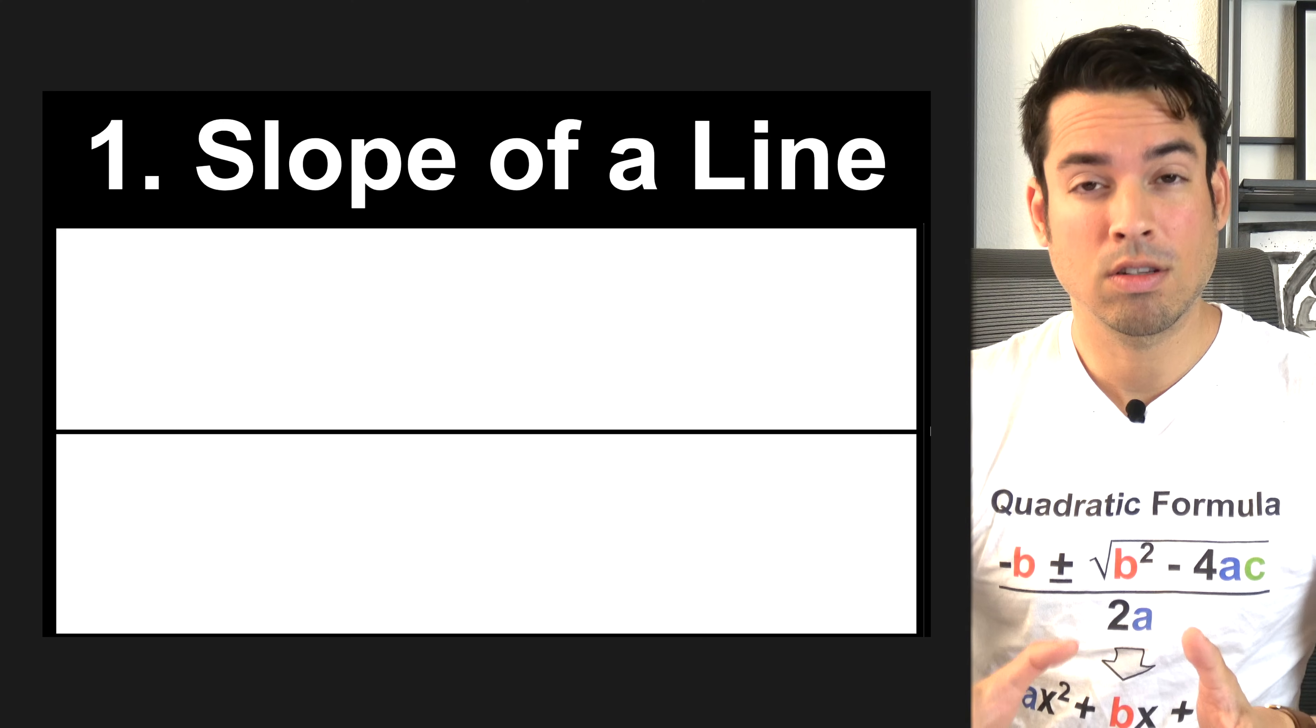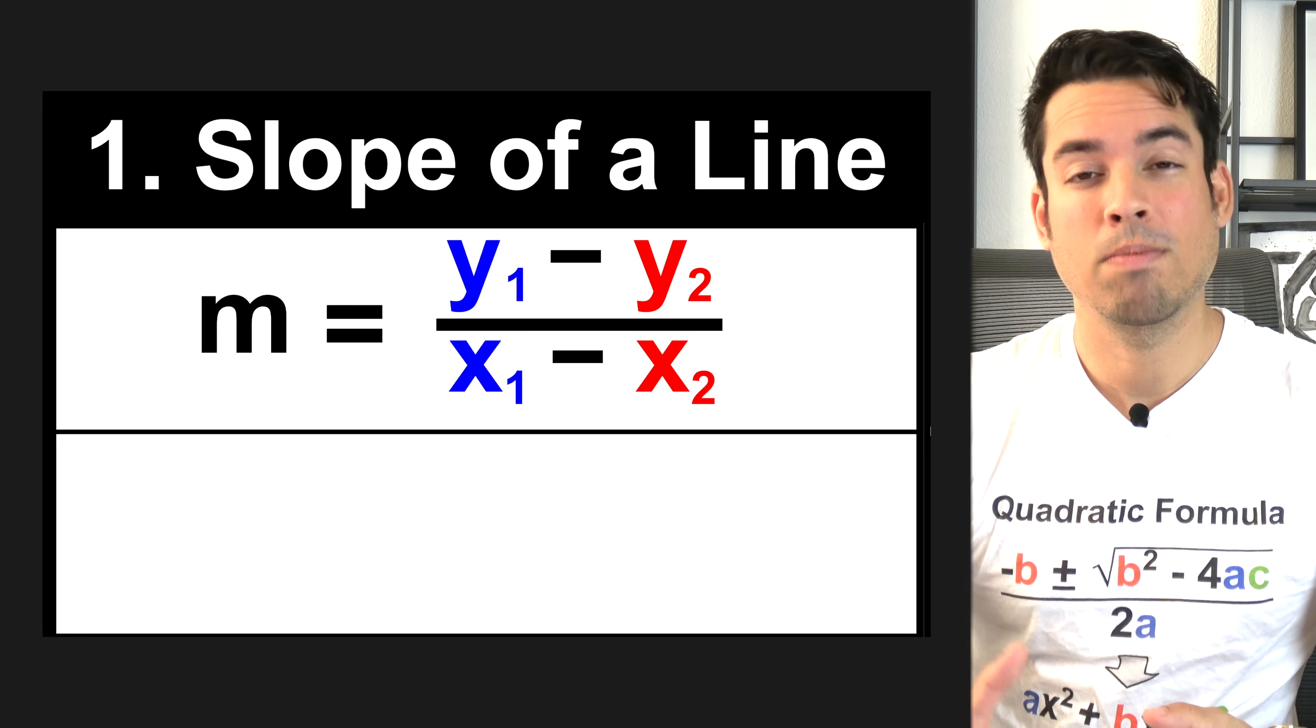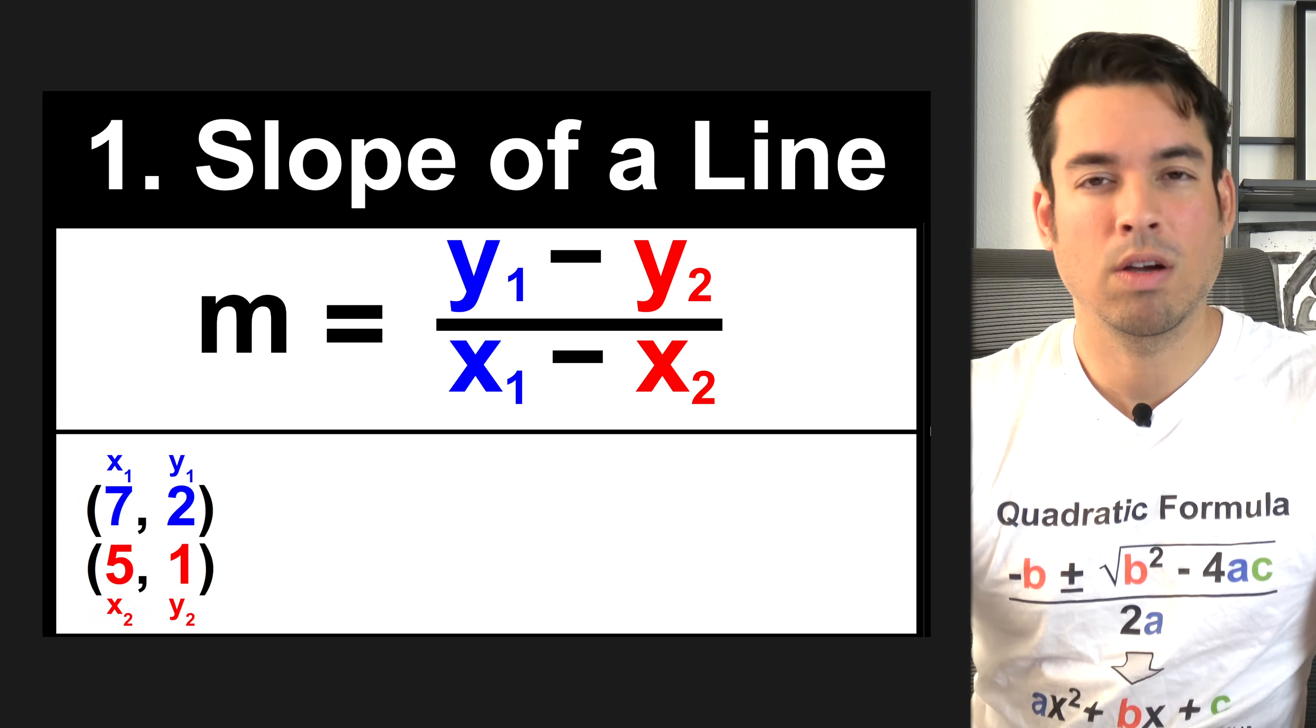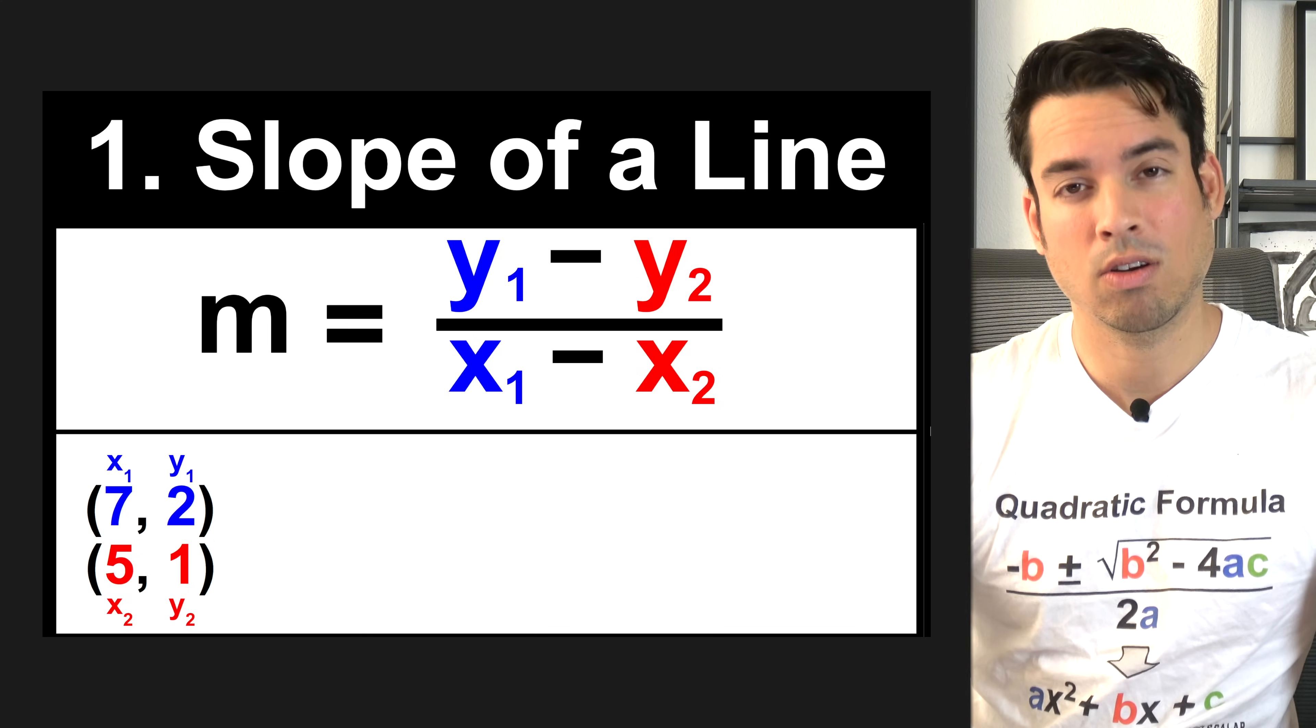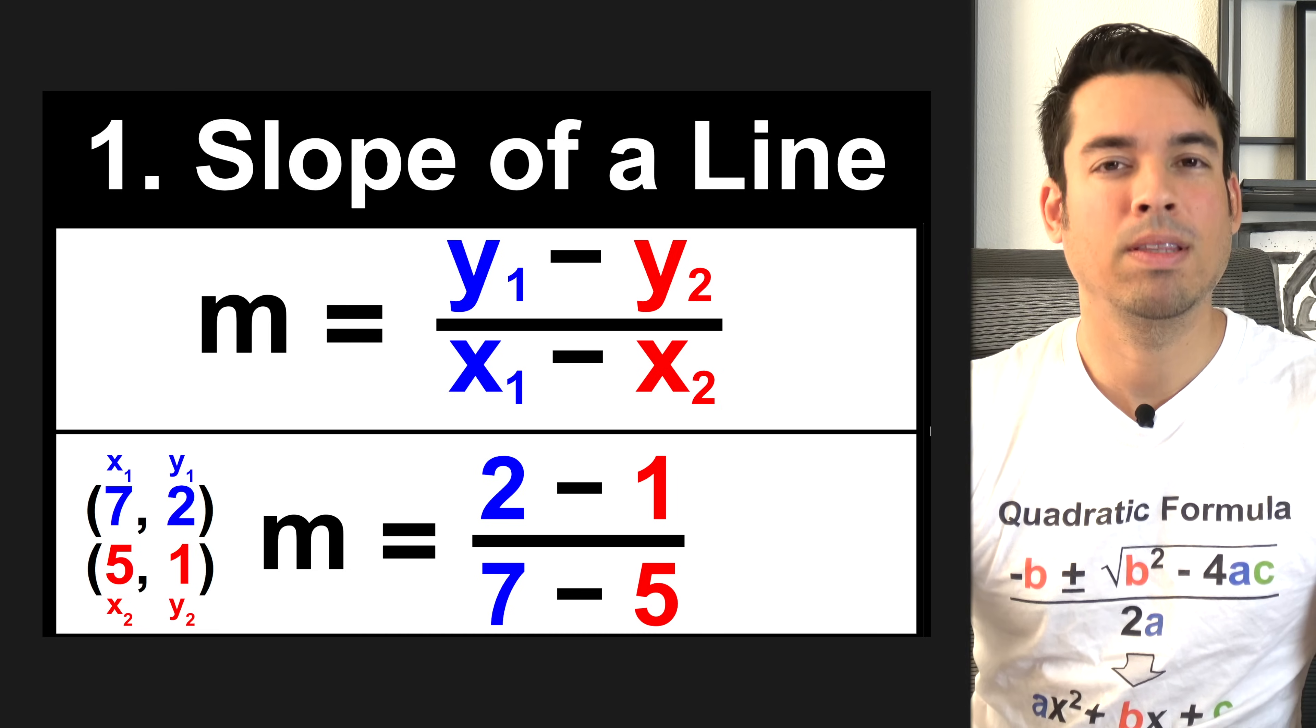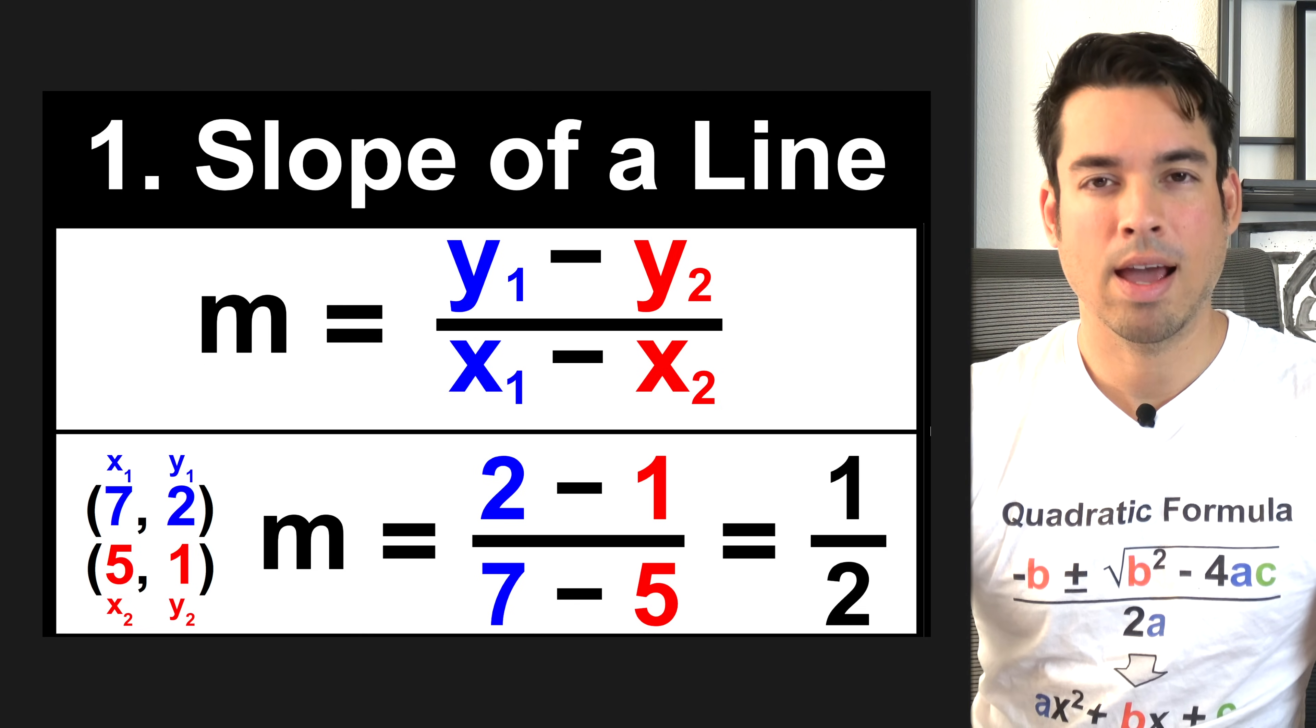The first formula is for calculating the slope of a line. Your M represents the slope, and the formula is Y1 minus Y2 over X1 minus X2. Here's an example of two points that are coordinates of a line, and this is how you use the slope formula to calculate slope. We take the difference of the Y values on the top and the difference of the X values on the bottom, which ends up giving us a slope of one half.